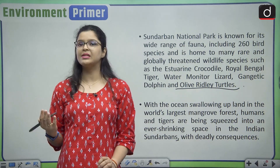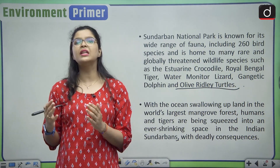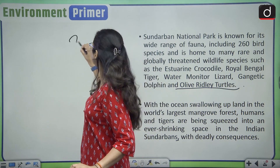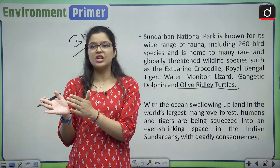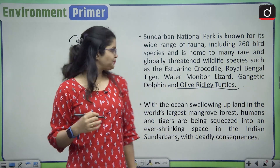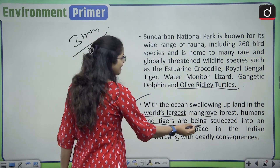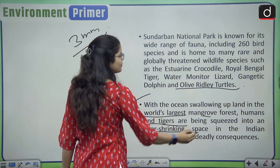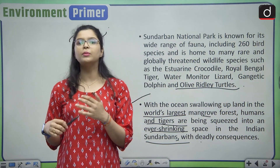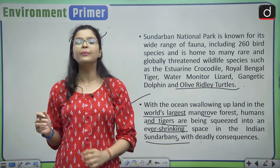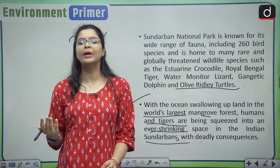The Sundarbans delta is facing the worst impact of climate change. Due to climate change, sea levels are rising at the rate of 3 mm per year. With this rise in sea level, the space is shrinking in the Sundarbans delta. With the ocean swallowing up land in the world's largest mangrove forest, humans and tigers are being fused into an ever-shrinking space in the Indian Sundarbans with deadly consequences. The Sundarbans remains constantly flooded due to the rise in sea levels.